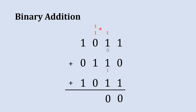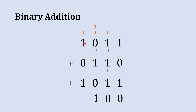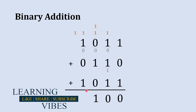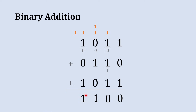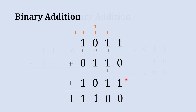Moving to the next column: 1 plus 1 plus 1 plus 0, which reduces to 1 plus 1, giving sum 0 and carry 1. Then 0 plus 1 gives 1. Next column: 1 plus 1 gives sum 0 and carry 1; 0 plus 0 is 0; 0 plus 1 is 1, so the column sum is 1. Finally, we have one carry remaining with no digits left, so we write it directly. The result is 11100.